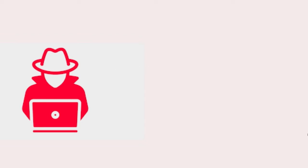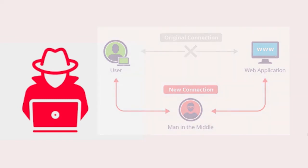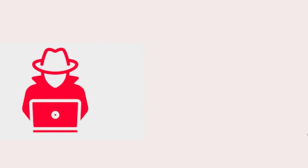If you want to send any data from the attacker, the attacker will go to the router. The attacker will see all the data from the victim's side. This is actually the man-in-the-middle attack — and that is the same as Burp Suite: the man in the middle of the attack.